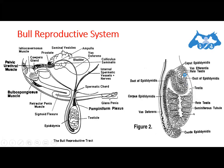From the ductuli afferentia, sperm empty into the epididymis. This is a long tortuous duct located outside the testes, through which sperm migrate slowly. It is divided into three parts: the head, the body, and the tail. The tail portion is the chief site of sperm storage.